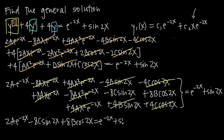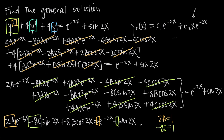Now we equate coefficients from left and right. For e^(-2x): 2a = 1, so a = 1/2. For sin(2x): -8c = 1, so c = -1/8. For cos(2x): there is no cosine term on the right-hand side, so 8b = 0, giving b = 0.